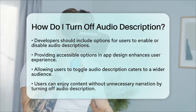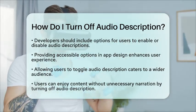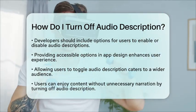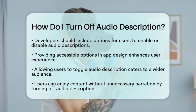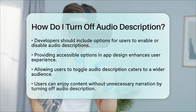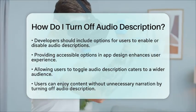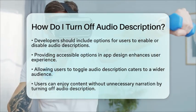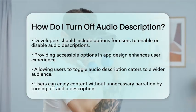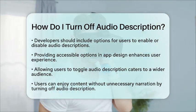Providing accessible options is essential in app design. Audio description is just one of many features that can improve user experience. By allowing users to turn it on or off, applications can cater to a wider audience, ensuring that everyone can enjoy the content without unnecessary narration. So, whether you are watching a movie or using an app, you now know how to turn off audio description when you no longer need it.